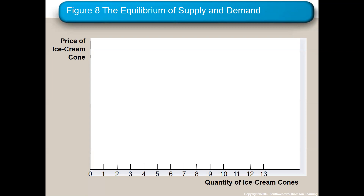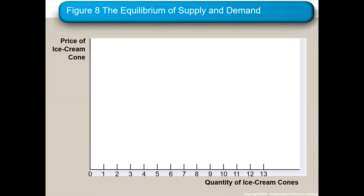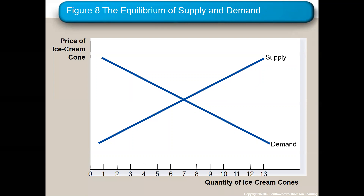The law of demand says there's an inverse relationship between price and quantity. Demand is the amount of goods buyers are willing and able to purchase. What you really need to remember about quantity demanded is that a price change affects quantity demanded.